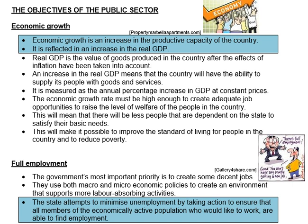Real GDP calculates the value of whether there's an actual increase in what was produced in the country. We use constant prices, so we take out the effects of inflation. So if the real GDP is increasing, it really means we have produced more. If there's an increase in real GDP, the country will have the ability to supply more goods and services — more needs can be satisfied. When they ask you to calculate it in a data response question, you calculate the percentage change in GDP at constant prices — the percentage increase in real GDP.